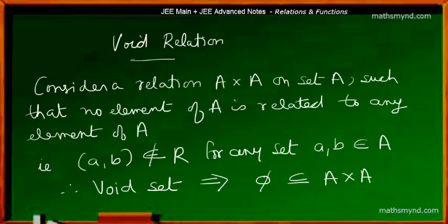Let's now go into specific types of relations and we begin with void relation, that's an empty relation which means that there are no elements or ordered pairs present in this particular relation.